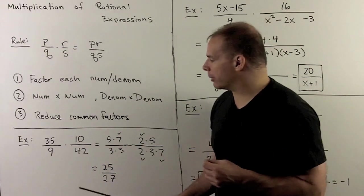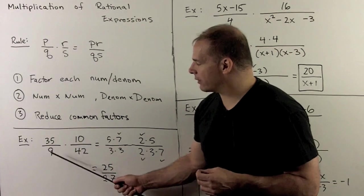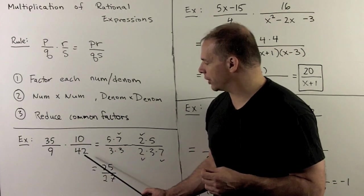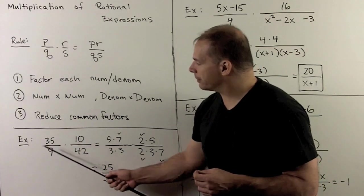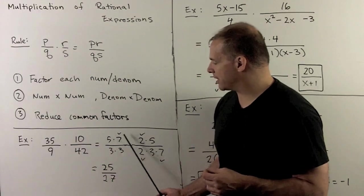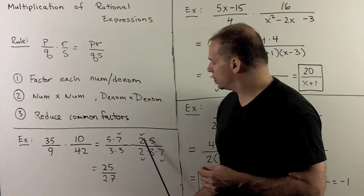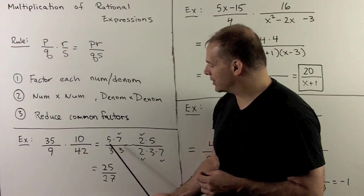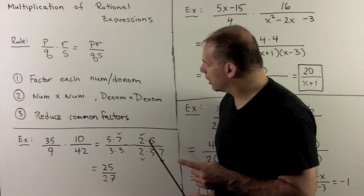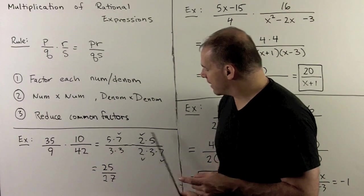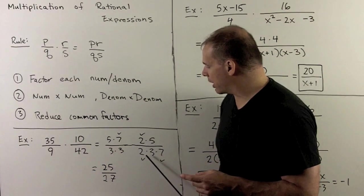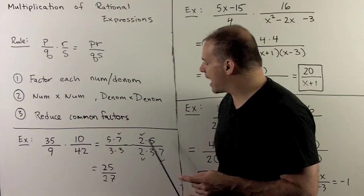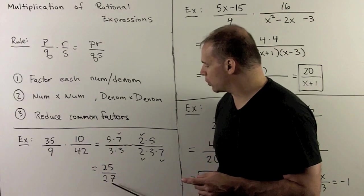Now, with rational numbers, I could take something like 35 over 9 times 10 over 42. Factor each term completely, so 5 times 7 over 3 times 3, 2 times 5 over 2 times 3 times 7. We multiply, which is just the same as extending your bar. I can now cancel, so the 7s go away, and these 2s go away. That leaves me with a 25 over 3 cubed, which is 27.